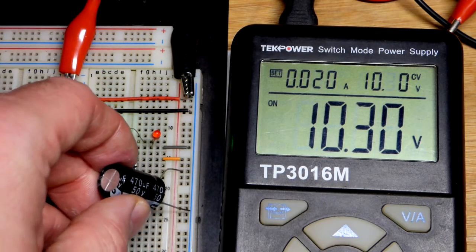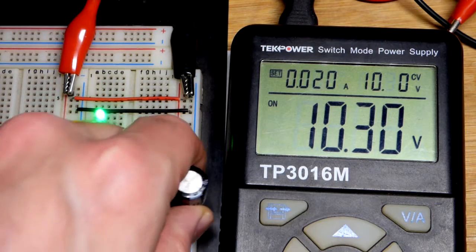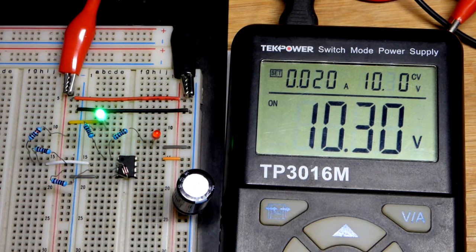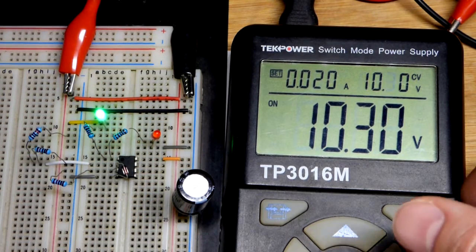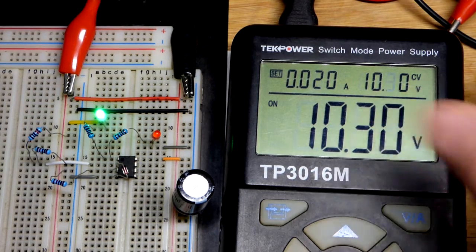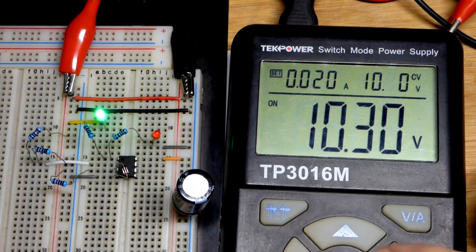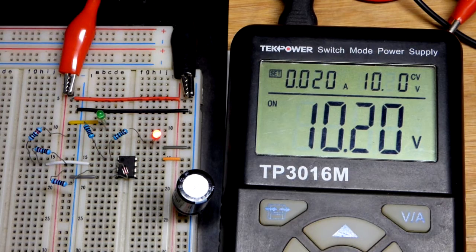I'm just going to take a 470 microfarad capacitor there, put it across the supply rails and hopefully we won't run into that problem as much. So in any case I have this set somewhere about 10.2 volts, the output should change there.